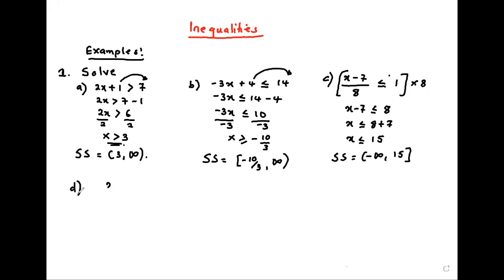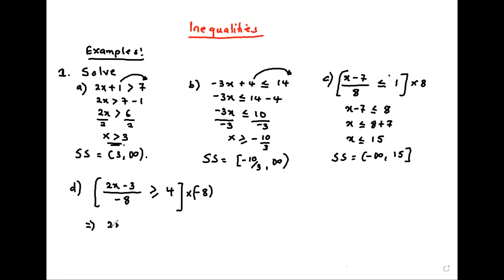Next: (2x minus 3) over negative 8 is greater than or equal to 4. We want to solve this, so multiply throughout by negative 8 and get 2x minus 3 as the only thing remaining on the left. Because we're multiplying by a negative number, the inequality will change direction.